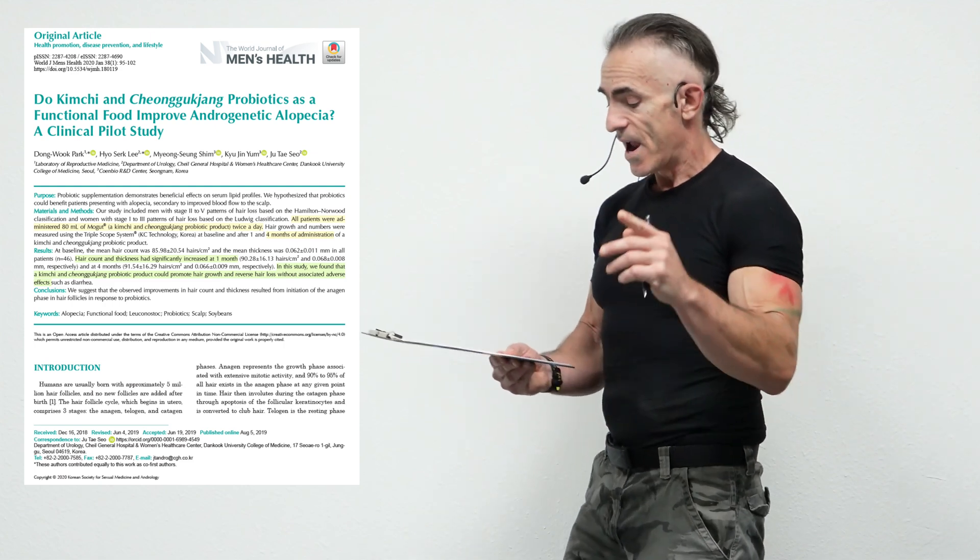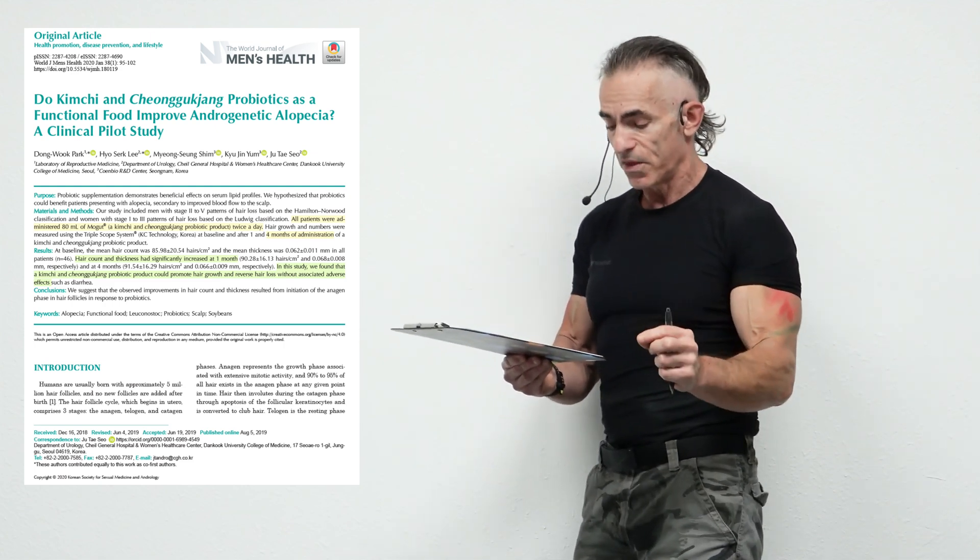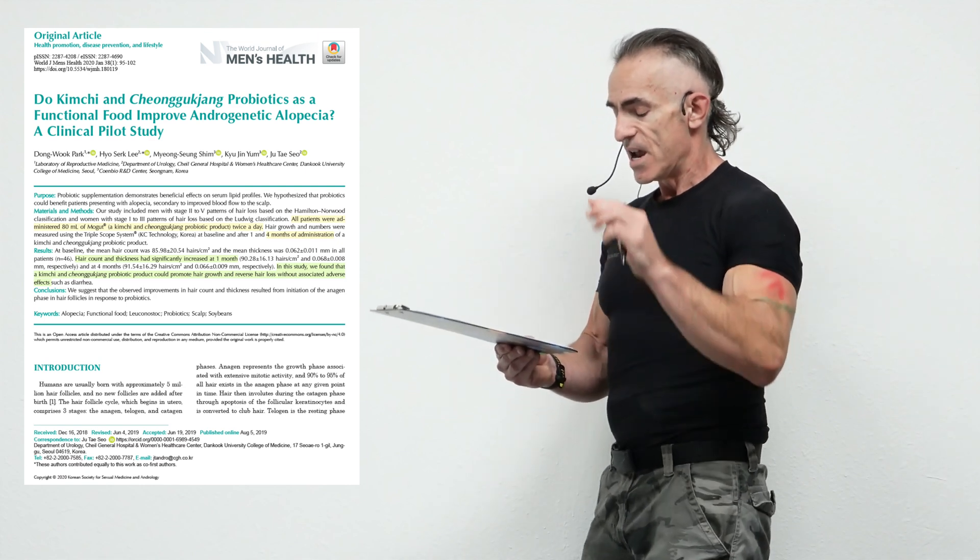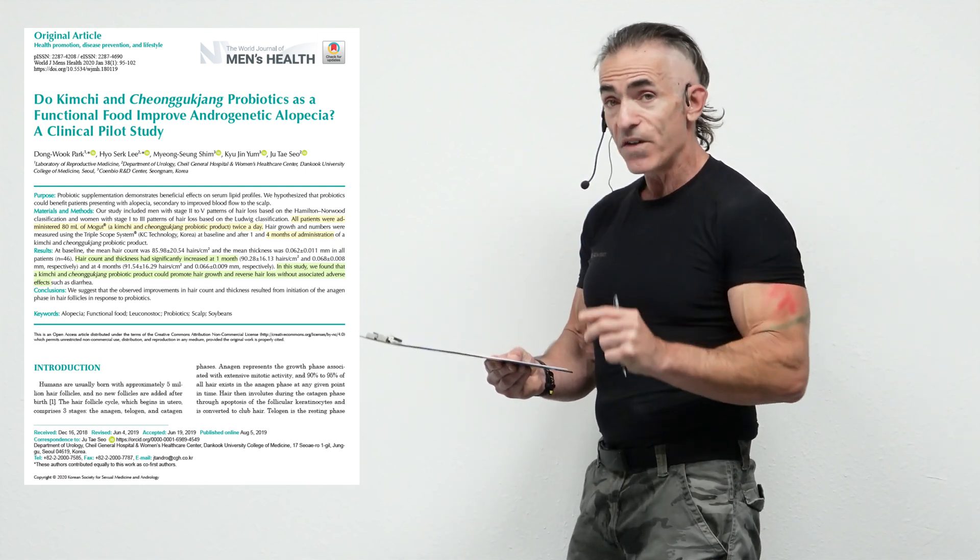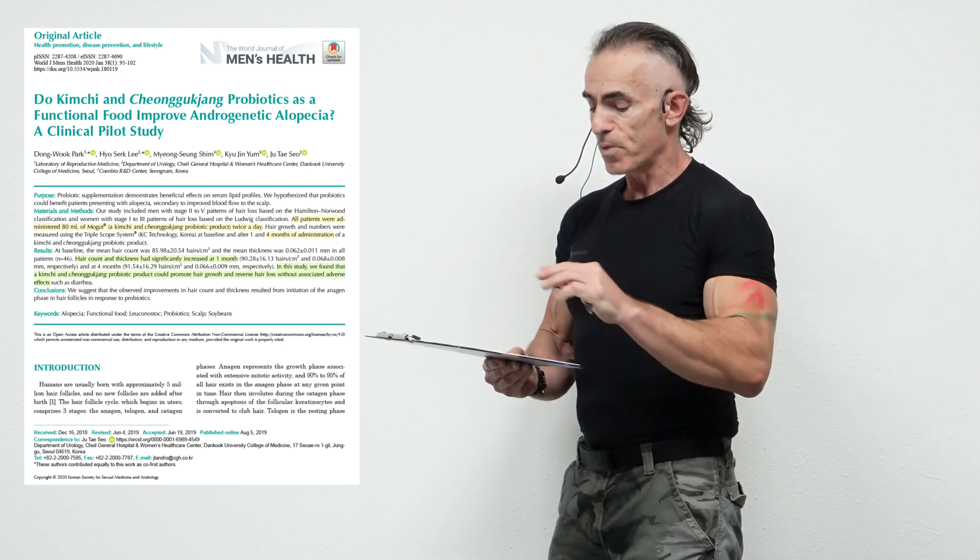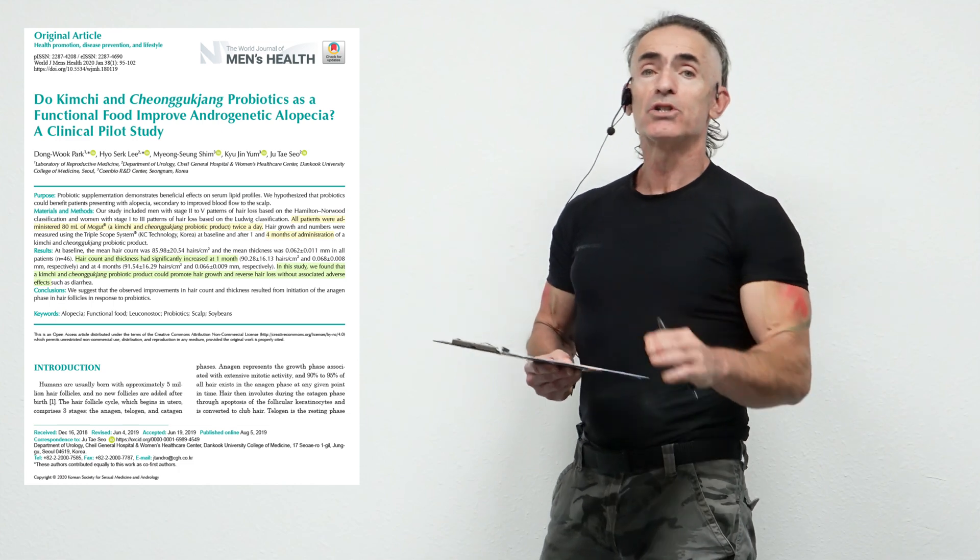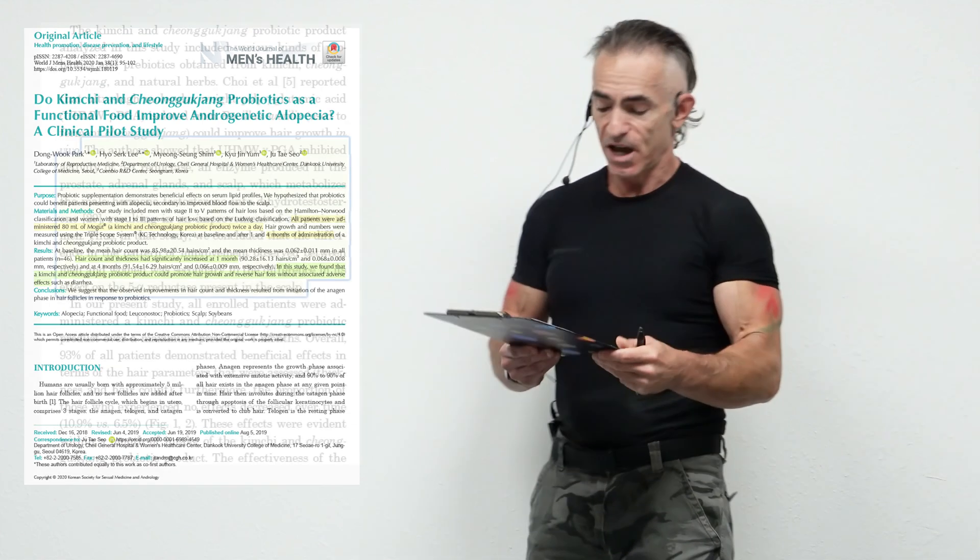This is what we're waiting for. Hair count and thickness had significantly increased at one month and at four months. In this study, quoting, we found that a kimchi and Shunggu Zhang probiotic product could promote hair growth and reverse hair loss without associated adverse effect.